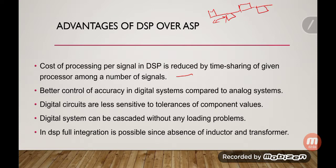Suppose the bit period is two seconds. For n equal to zero you are sending one bit, then at n equal to two another bit for the same signal. Using the odd instances, we can send or process other signals — for even instances we process one signal and for odd instances we process another signal. That's why, using time multiplexing, cost of processing is reduced in DSP, while in ASP it is not possible because the signal is continuous.